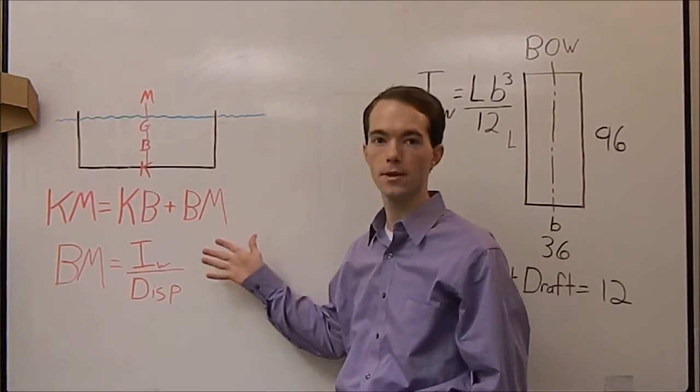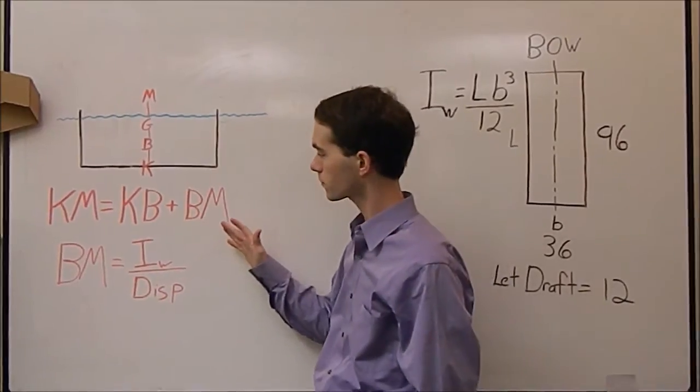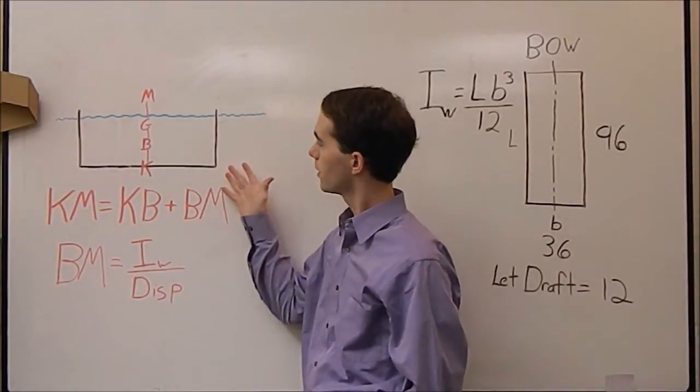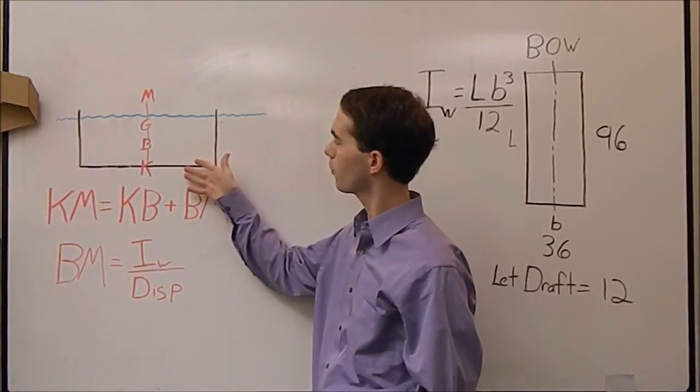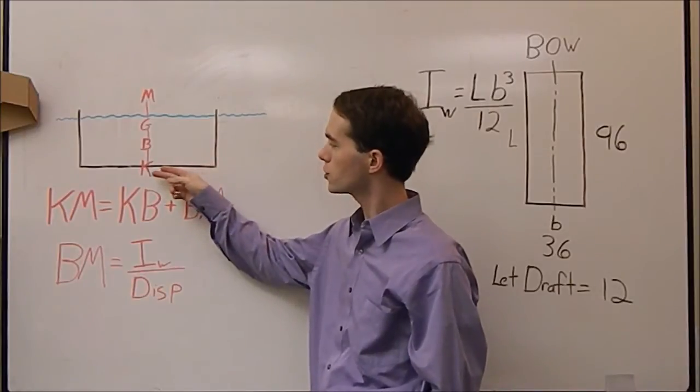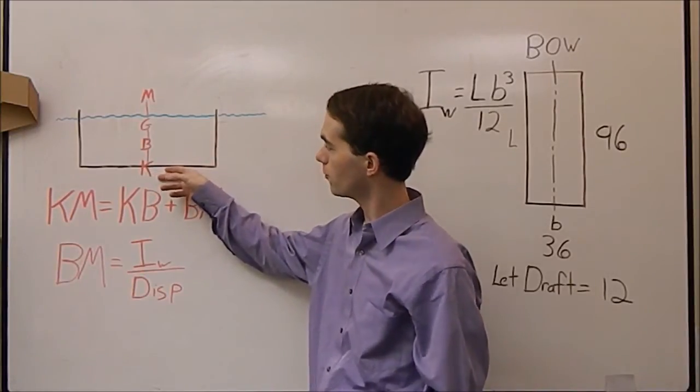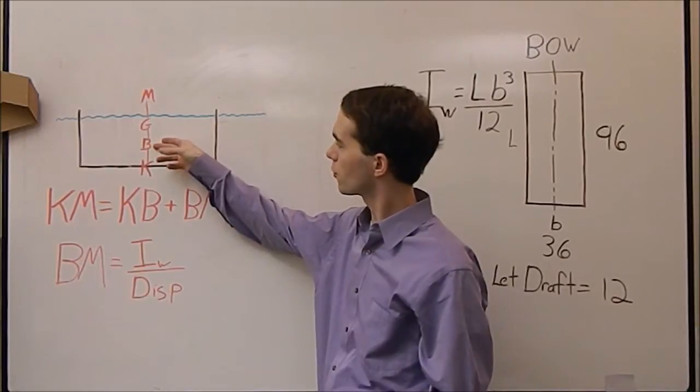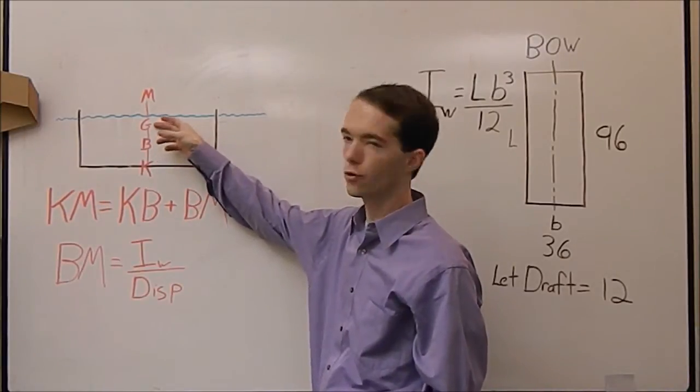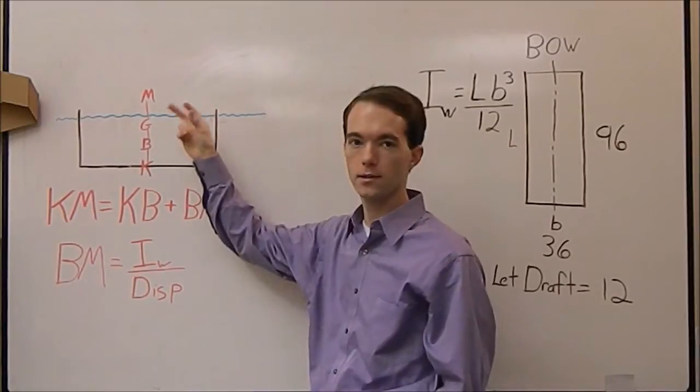Specifically, we're going to talk about metacenter and roll stability. There's a few things that we'll need to define here when we're talking about metacenter. First symbol that we use is K for the keel, which is the bottom of your boat. Then B represents your center of buoyancy, G is your center of gravity, and M is the metacenter.